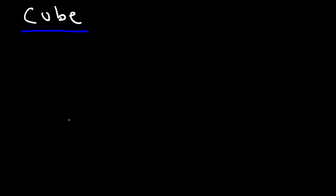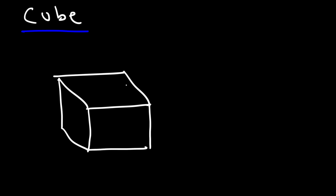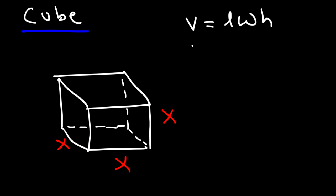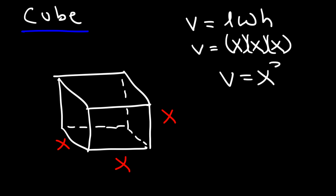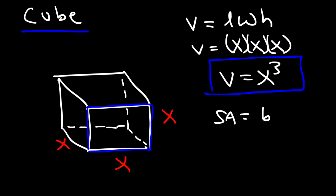The last shape is the cube, where all sides are equal, each side being X. The volume of a cube is X times X times X, which is X cubed. The surface area of a cube is the area of all six faces. The area of one face is X squared, so the total surface area is 6X squared.